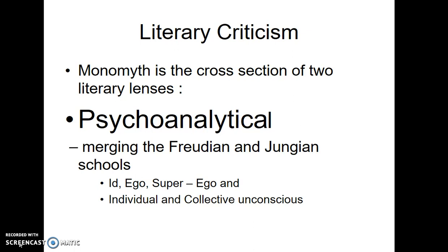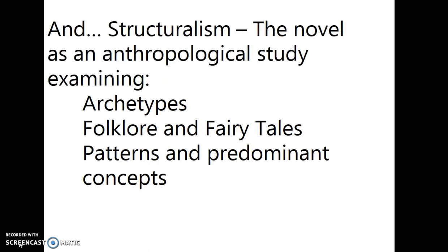The first is the psychoanalytical theory, which is grounded in the teachings of both Freud and Jung. We went over Freud's id, ego, and super-ego earlier in the year, which is part of this psychoanalytical analysis of the hero. But really, the collective unconscious and archetypes are where we focus when discussing the monomyth — that's part of the Jungian school of psychoanalysis. It is also an examination through a structural lens, or the idea that we're bringing a pre-existing structure to the text, rather than the text dictating how we analyze it.